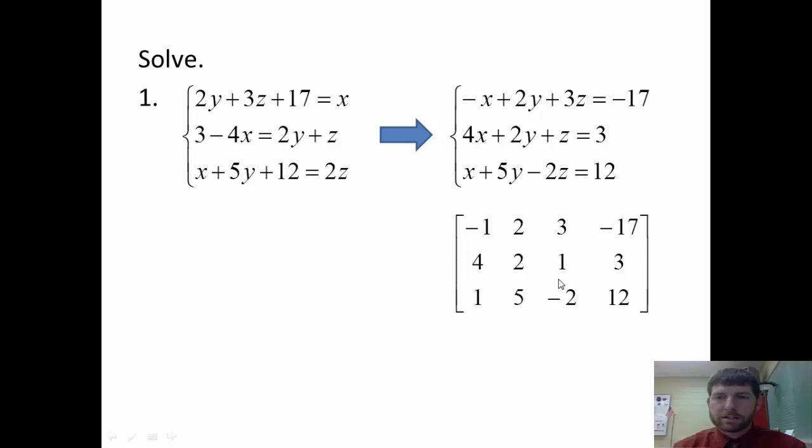So we can end up with positive 12 over here. So we have this final cleaned up system, and we can see that we're going to key it into the matrix. When we do it as an augmented matrix, we're just dumping the variables. Negative 1X, 4X, 1X is our first column, our X column. 2Y, 2Y, 5Y.